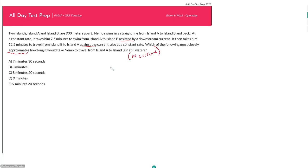Still waters means with no current—that would be like walking without the assistance of the moving walkway. Here we have two parts to our trip. When he's going from island A to B, Nemo is going with the current—so this is Nemo, this here is the current.